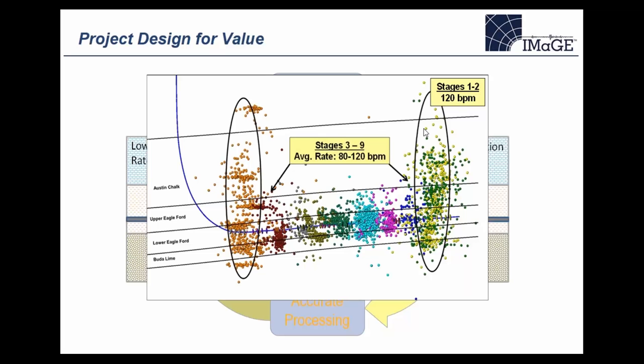The first two stages were pumped at high rate, and there's a lot of height growth — the microseismic broke above the top of the Eagle Ford into the Austin Chalk, providing undesired height growth. Fracture cost — the horsepower of the hydraulic fracture — was partially wasted putting energy into non-targeted reservoir. Stage three dropped the rate down to 80 barrels per minute, then stage by stage it increased up to about 110 barrels by stage eight.